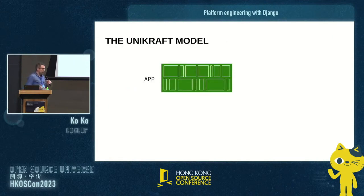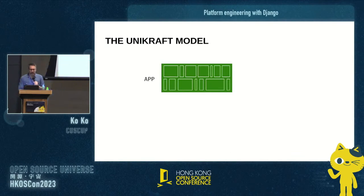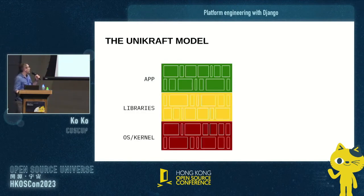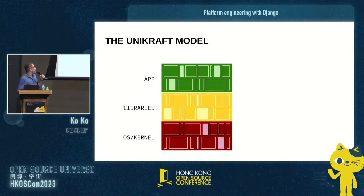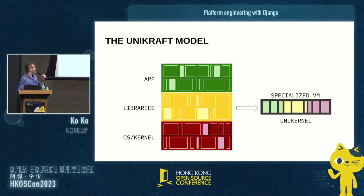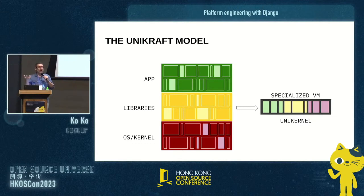Let's start with Unikraft's approach on how to create unikernels. When you create an application traditionally, you have your application along with some libraries and the operating system, and each one has its own components. But in practice, you only use a few of them. This is exactly what we do with Unikraft — we take only the components that are actually used and pack them together into a single unikernel. Our approach is more additive rather than subtractive.